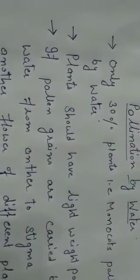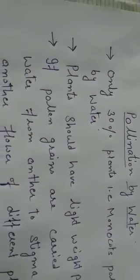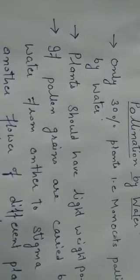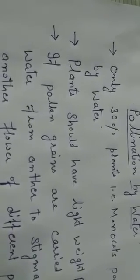Two more plants found in water are water hyacinth and water lily, which are given in your book. Although these are aquatic plants, their flowers emerge above the level of water and are pollinated by wind or insects, not by water. So water hyacinth and water lily are aquatic but are pollinated like normal land plants.